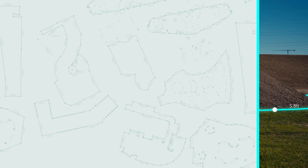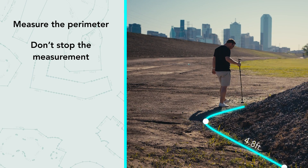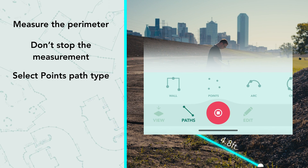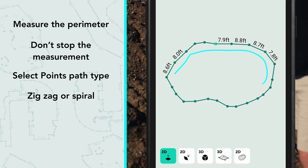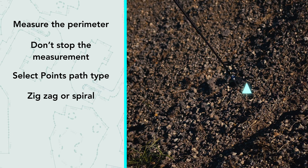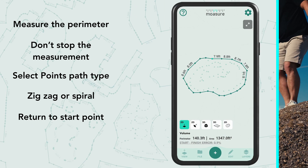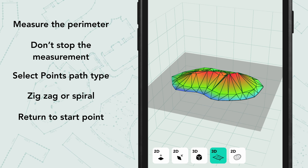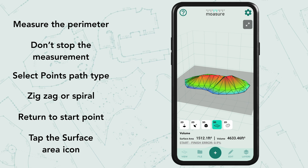To recap: measure the perimeter first. When back at your starting point, do not stop the measurement — select the Points path type option. Zigzag across or spiral around the space inside the perimeter, collecting as many points as necessary for the different elevation changes. Once you've captured enough points, return to your perimeter starting point for improved accuracy. Tap the surface view icon to see your completed measurement and volume calculation.